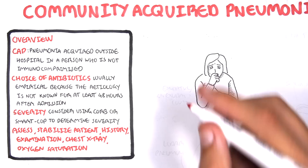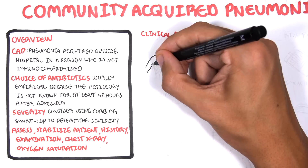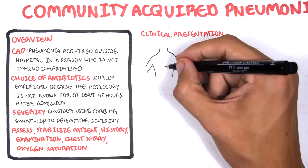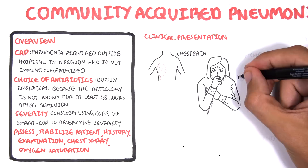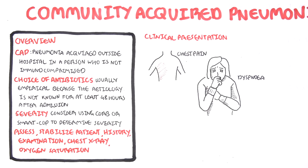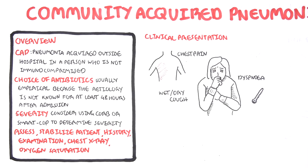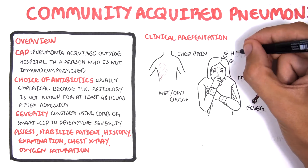The clinical presentation of pneumonia includes chest pain, dyspnea, a wet cough or a dry cough, fever, and headache.